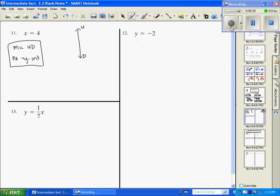And then over here, y equals negative 2. That's a horizontal line. So that my slope is going to be 0. And my y intercept is going to be 0, negative 2.